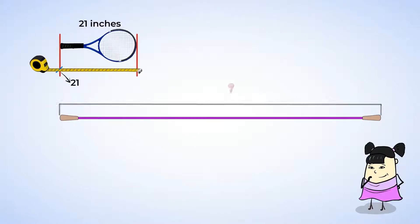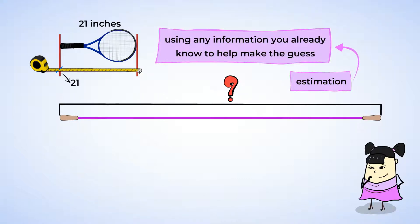Let's estimate how long her jump rope might be. We can use the length of her tennis racket to help us estimate the length of the jump rope. Remember, estimation isn't just about making a guess. It's about using any information you already know to help make the guess.